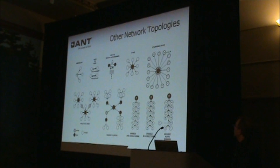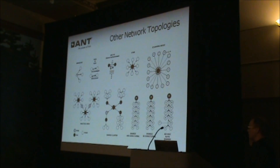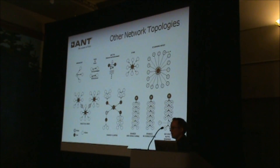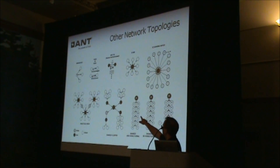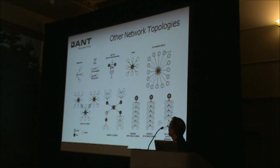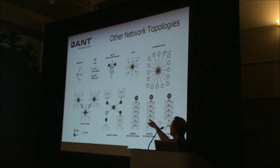This is a network topology diagram taken from our data sheet, and hopefully it makes a little more sense now than a quick glance earlier. What this shows is basically a collection of ANT channels. Over here on the top left side, we have three unidirectional ANT channels all broadcasting to slave devices.